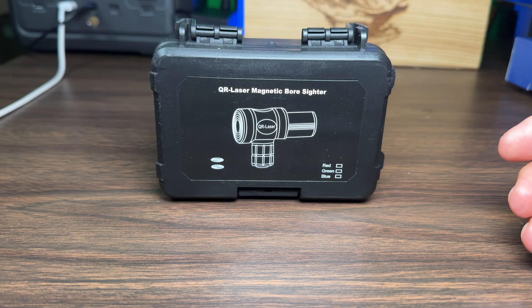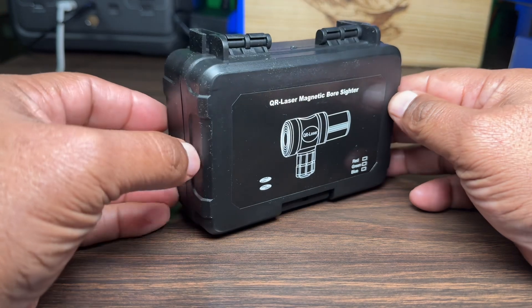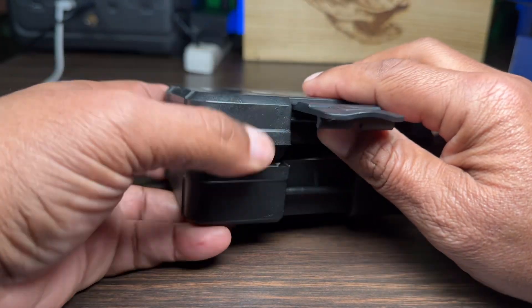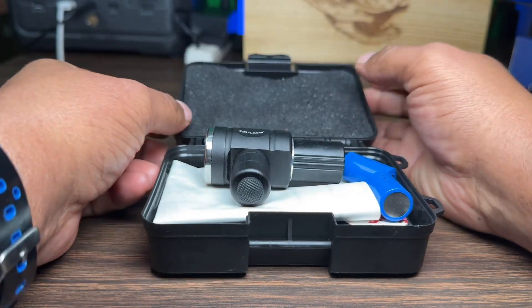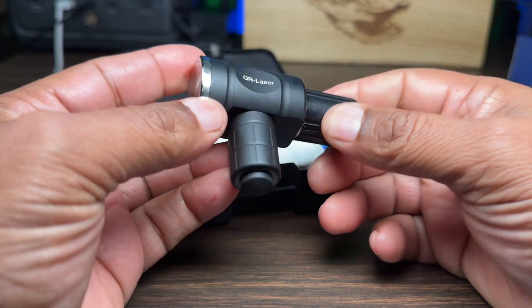Hey guys, today we're going to take a look at this magnetic bore sight. It comes in this nice little travel box that pops open really nicely. Inside you're going to find your bore sight, which is all metal. We'll come back to this in just a second.